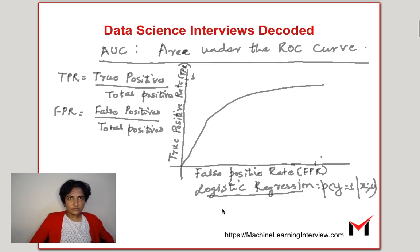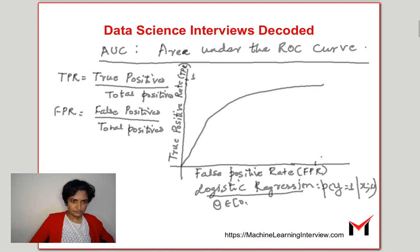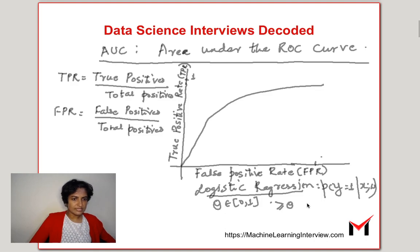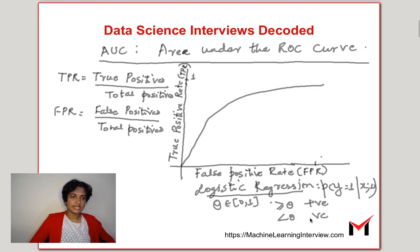Typically, in order to classify a point as positive or negative, we choose a threshold theta which could be anywhere between 0 and 1. The classification is done by saying that if the probability is greater than or equal to theta, then it's a positive class, and if it is less than theta, we have a negative instance.